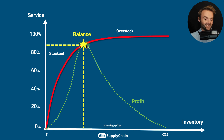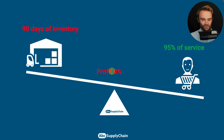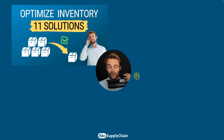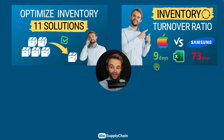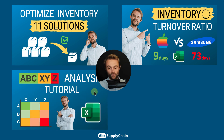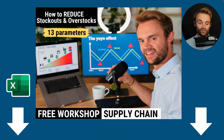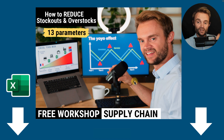Your challenge as a supply chain leader or entrepreneur is to find the balance between customer service and inventory costs — that balance point is critical for your profitability, performance, and impact on the planet. I recommend watching my other videos on inventory optimization, inventory turnover ratio, ABC-XYZ analysis, and safety stock formulas. I also have a free workshop on the 13 parameters to reduce stockouts and overstocks in times of high uncertainty. Links are below — please like and comment!